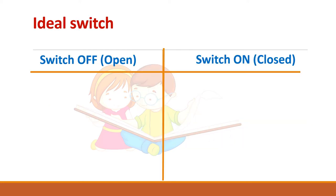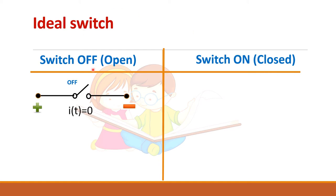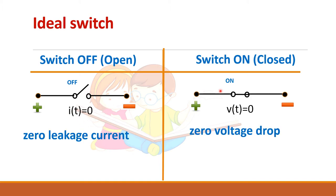Let us see the difference between the open condition and the closed condition in an ideal switch. When the switch is open, the current through it is zero. When the switch is closed, the voltage drop across it is zero.